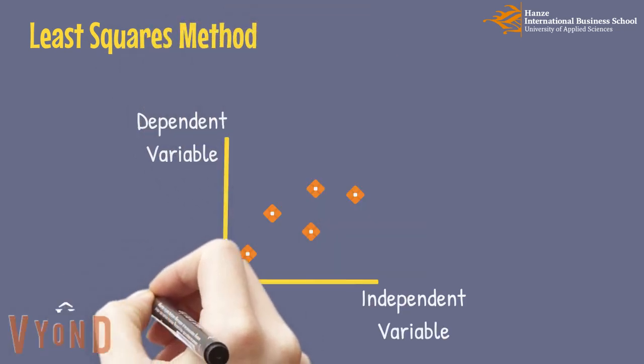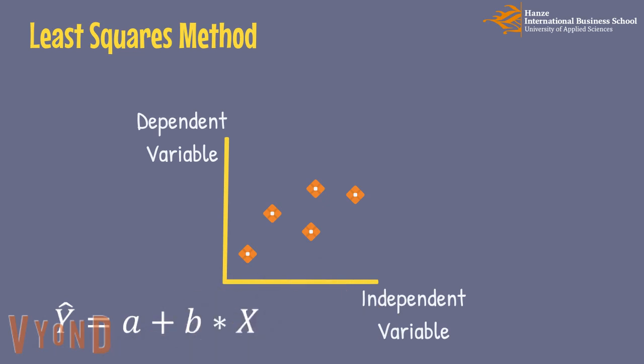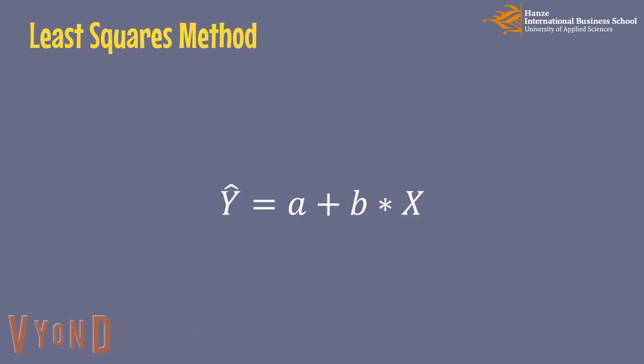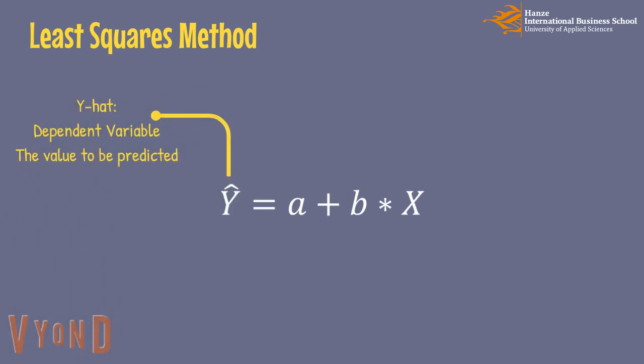The equation is y-hat equals a plus bx. Least-square equation is also called regression equation. In this equation, y-hat indicates the dependent variable. This is the value that we need to predict.